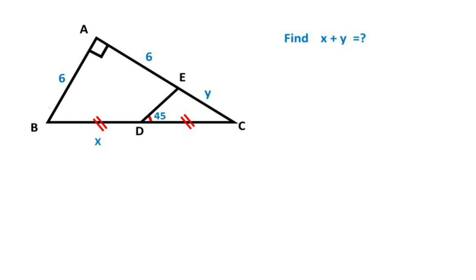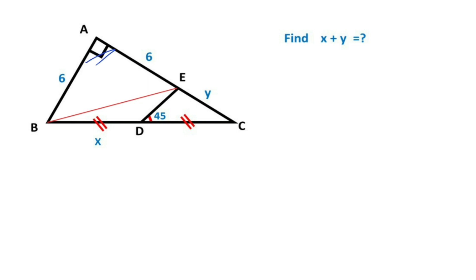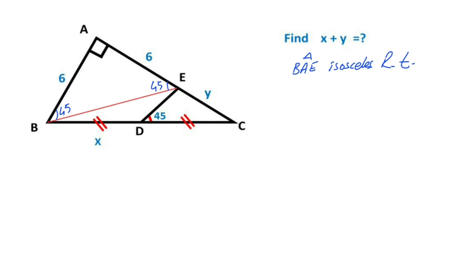In this video we have one triangle where two sides are six units and two parts are equal. This angle is given as 45 degrees and x plus y is asked. First step: if we connect points B and E, notice that this triangle is an isosceles right triangle. These two angles must both equal 45 degrees.